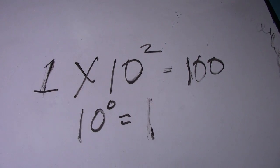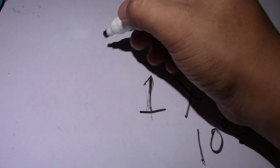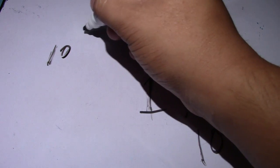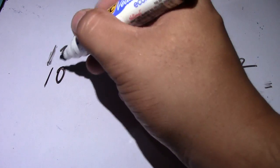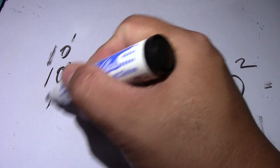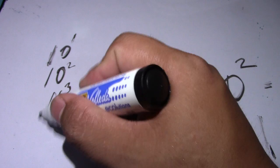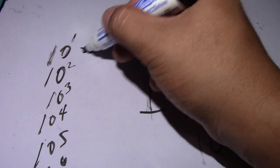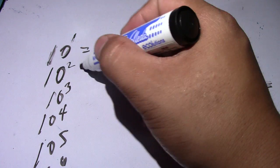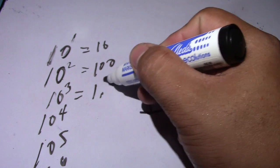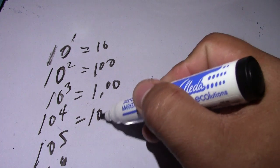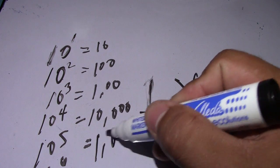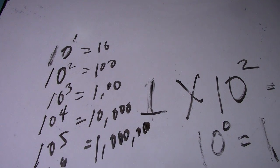Let me give other examples. 10 to the 1, 10 to the 3, 10 to the 4, 10 to the 5, and 10 to the 6. So 10 times 10 is 100, this is 1,000, this is 10,000, and 1 million.